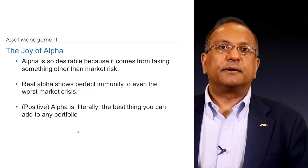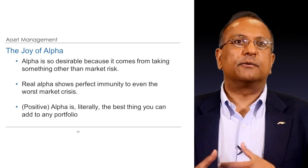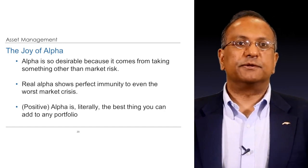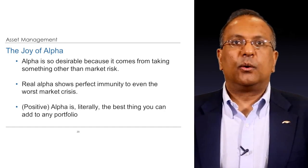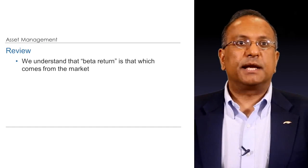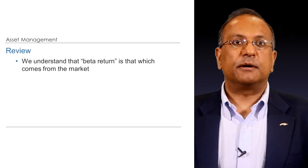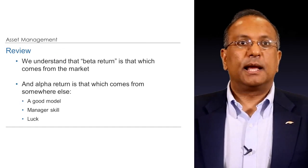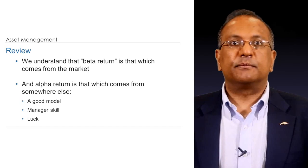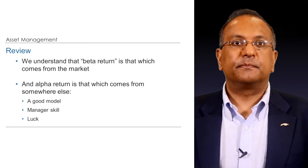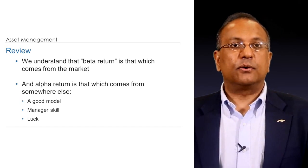So now let's examine alpha with a few pictures to try and reinforce some of these concepts we've just gone through. We understand that beta is that return that comes from the market, and alpha is that which comes from somewhere else — either a good model, or manager skill, or luck.